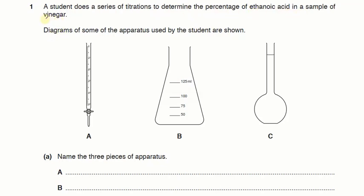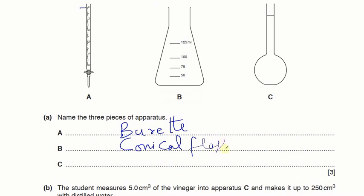So we got vinegar and we have to find the percentage of ethanoic acid. We got these diagrams and name the three pieces of apparatus. The A, you know there is a tap over here and it's 0 to 50, so this one is the burette while the center one B is the conical flask or we can say titration flask. This one C is volumetric flask.